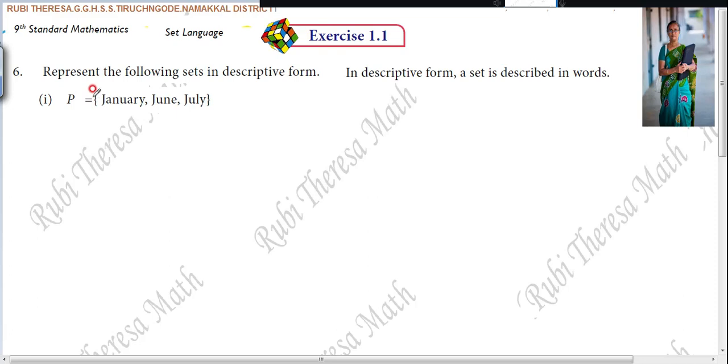Here you see P equals January, June, July. This is English month, name of English month. But you see the first letter: J, J, J.